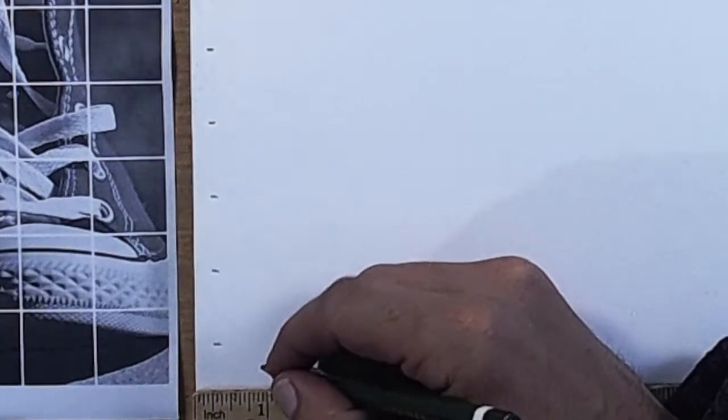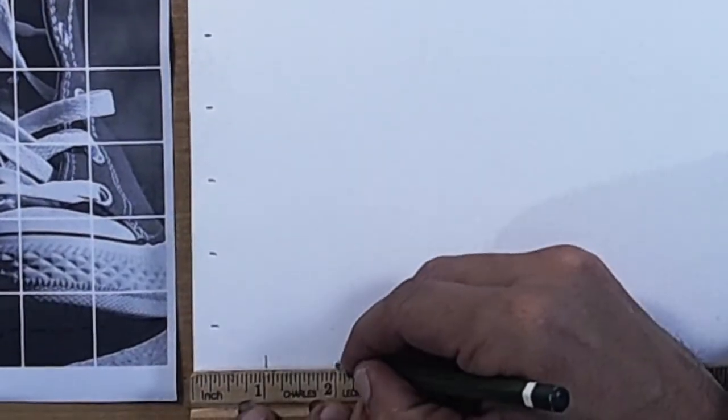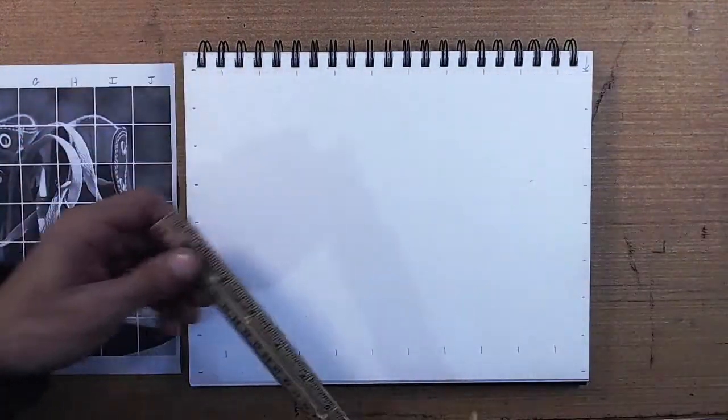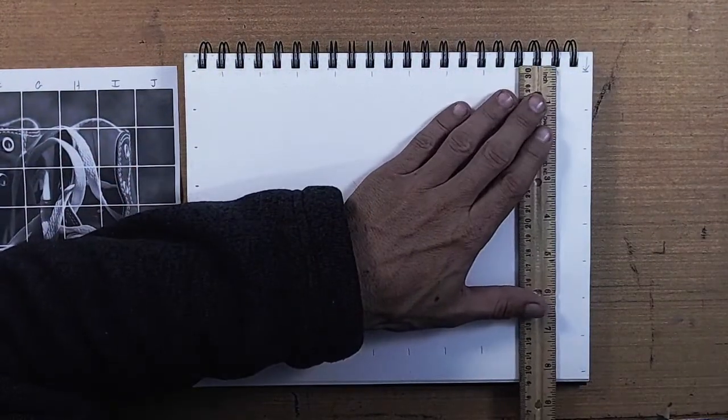When making a grid, it's really important to have marks across from one another, that is, on both the left and right side and along the top and the bottom. When we connect these marks, our grid lines will be perfectly parallel.